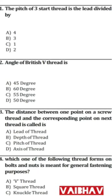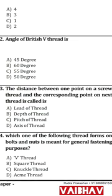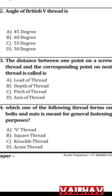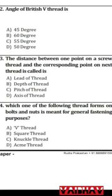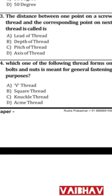Question 43: The distance between one point on a screw thread and the corresponding point on the next thread is called — answer is C — pitch of the thread.